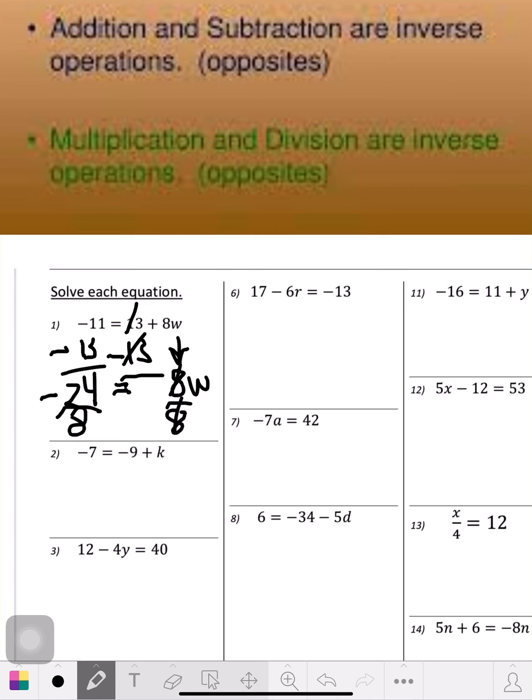Divide both sides by 8. Now these two 8s cross out—8 over 8 is only a 1, so it gets rid of itself. Now you have 8 divided by a negative 24, so a positive number divided by a negative number, they're opposites, so the negative wins out. Your answer is going to be negative 3 equals w.